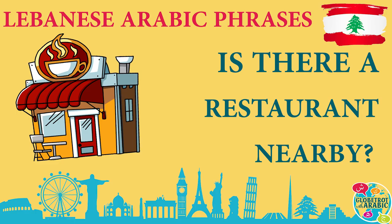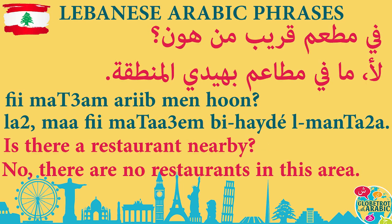Let's ask if there is a restaurant nearby in Lebanese Arabic. Let's break it down. 'Fi' means 'there is.' 'Matam' means restaurant. 'Areeb' means near or close — it literally comes from 'min,' meaning 'from,' but 'areeb min' means close to. 'Hoon' means here. So 'areeb min hoon' literally means 'close from here,' which means nearby.